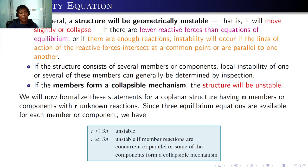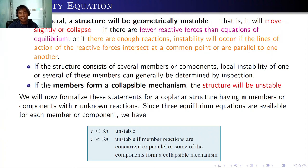In general, a structure will be geometrically unstable if: there are fewer reactive forces than equations of equilibrium, or if the lines of action of reactive forces intersect at a common point or are parallel to one another. If the structure consists of several members, local instability can generally be determined by inspection — if members form a collapsible mechanism, the structure will be unstable.